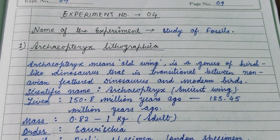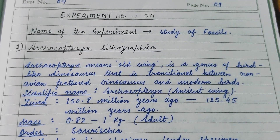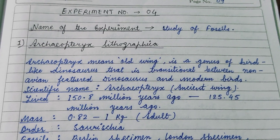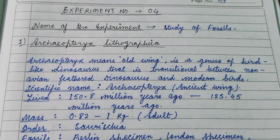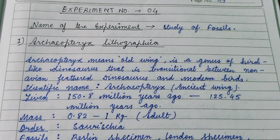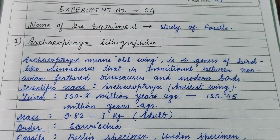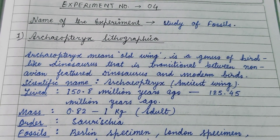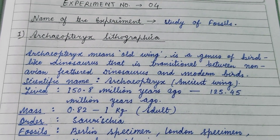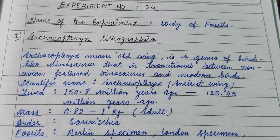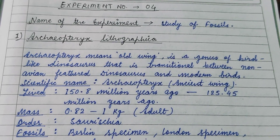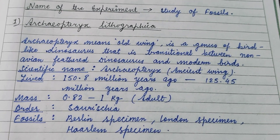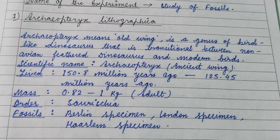Welcome to my channel. In this video we will discuss Archaeopteryx lithographica, which means 'old wing'. It is a genus of bird-like dinosaurs that is transitional between non-avian dinosaurs and modern birds. The scientific name Archaeopteryx means 'ancient wings'.